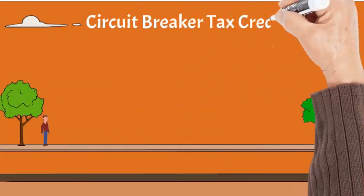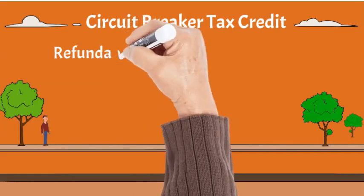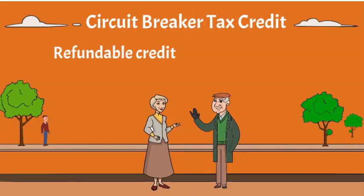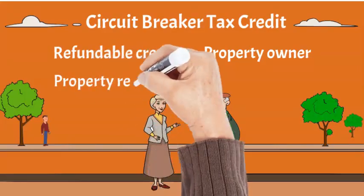You may be able to claim a refundable credit on your Massachusetts personal income tax return. The circuit breaker tax credit is based on the actual real estate taxes or rent paid on the Massachusetts residential property you own or rent and occupy as your principal residence.